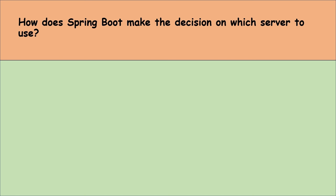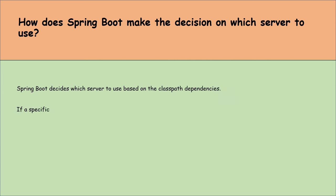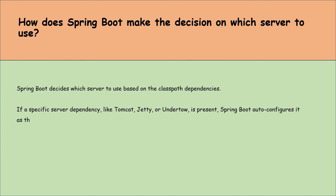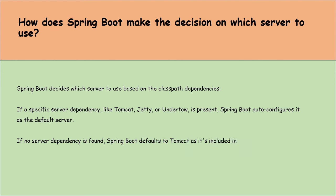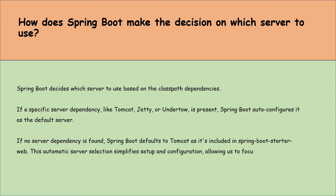How does Spring Boot make the decision on which server to use? Spring Boot decides which server to use based on the classpath dependencies. If a specific server dependency like Tomcat, Jetty, or Undertow is present, Spring Boot auto-configures it as the default server. If no server dependency is found, Spring Boot defaults to Tomcat as it's included in Spring Boot Starter Web. This automatic server selection simplifies setup and configuration, allowing us to focus more on developing the application.